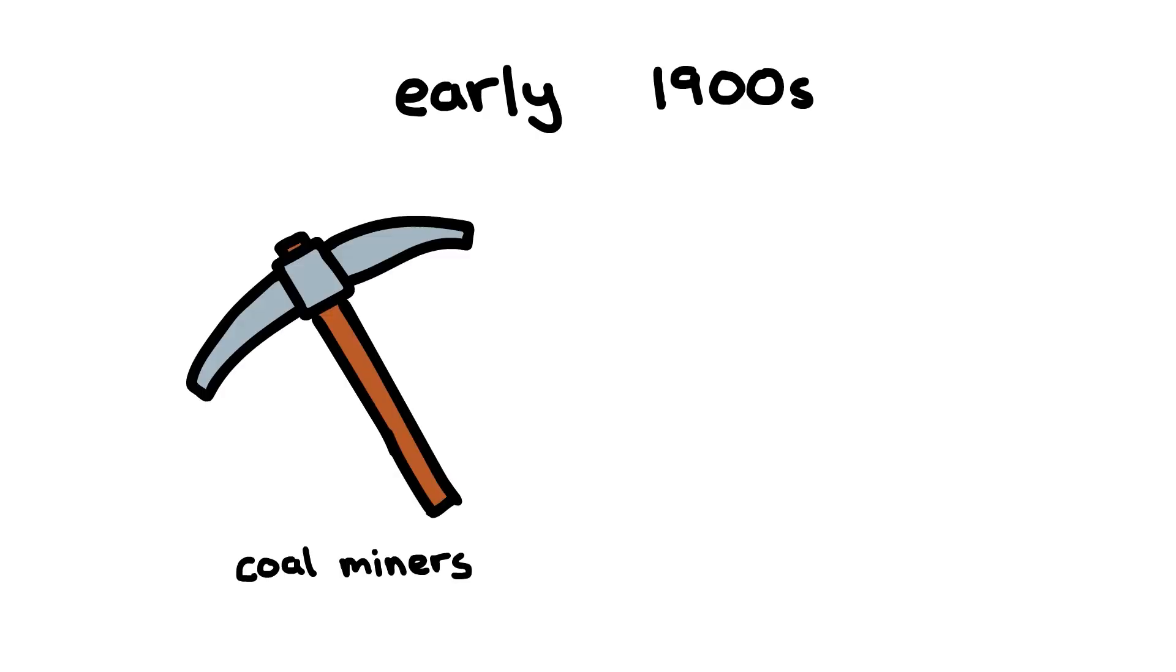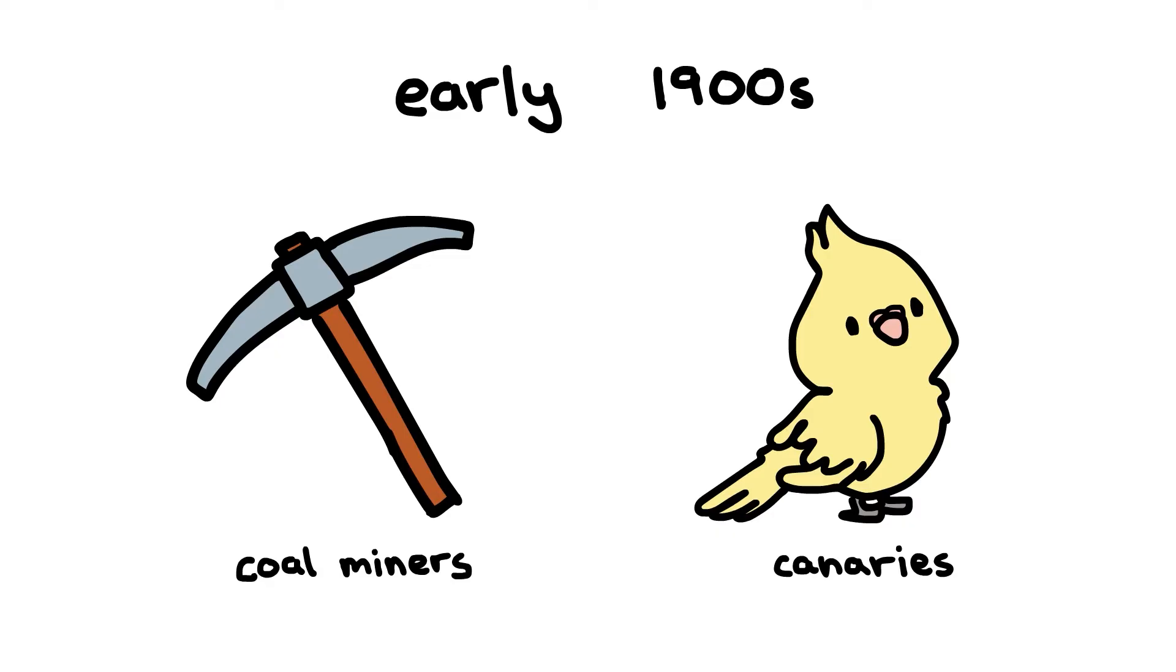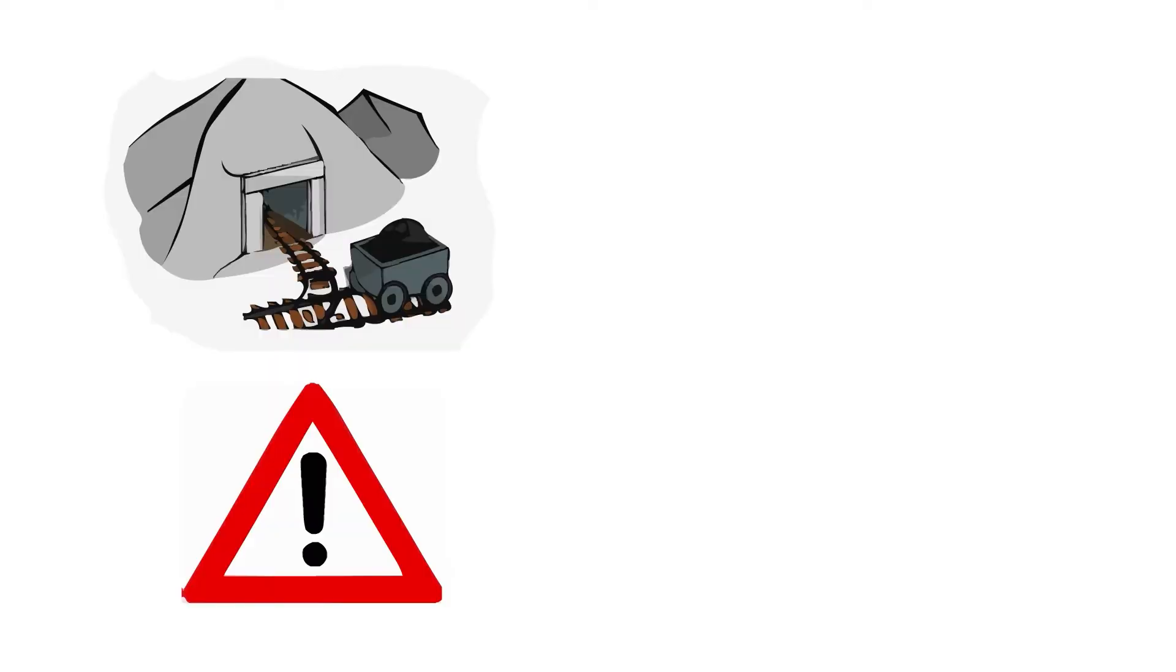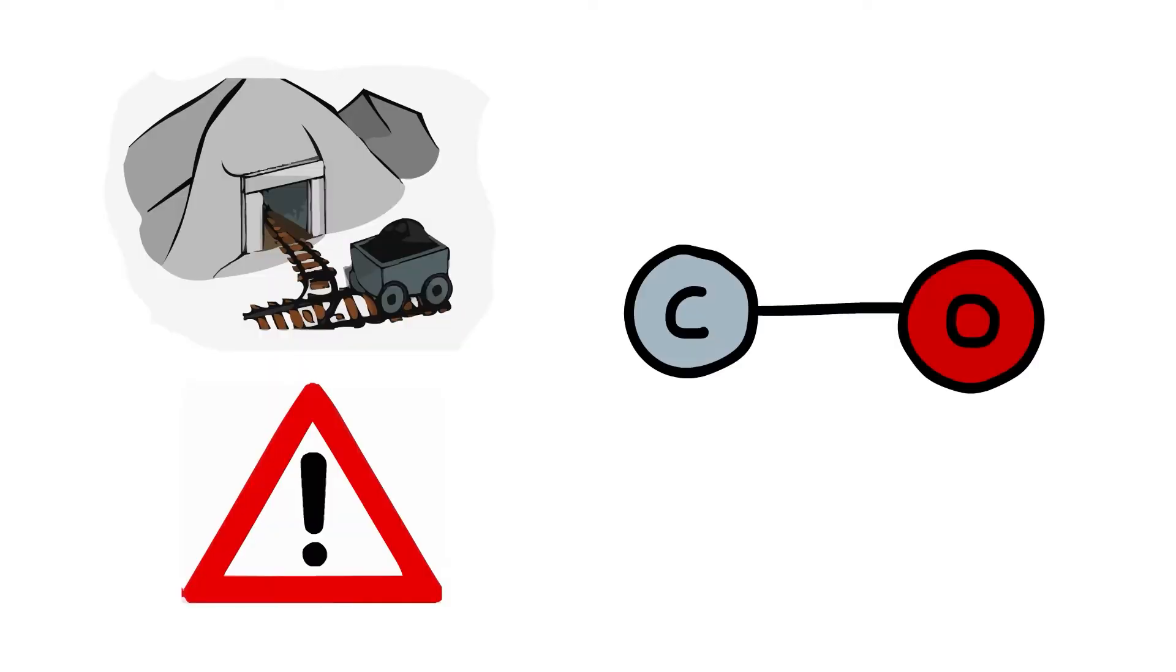In the early 1900s, coal miners in North America started to take canaries down into the mines with them. Mining was a dangerous job at the time due to the possibility of carbon monoxide in the mines.